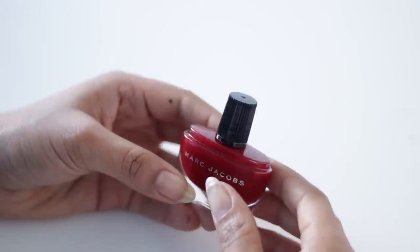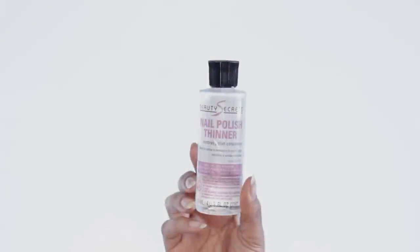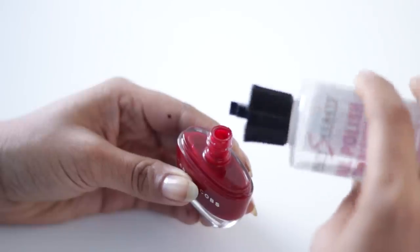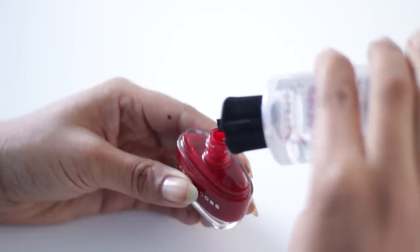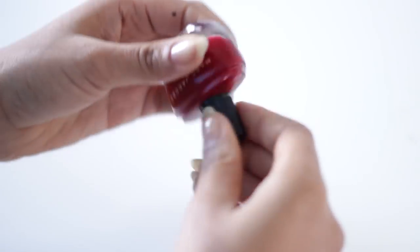So the first thing you actually want to do before polishing your nails is check the consistency. If your polish is too thick, you're going to want to grab your nail polish thinner and you can add three to four drops to begin with. You can always add more, but you can't take away, so always start with less than you think you need.